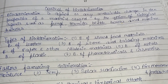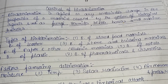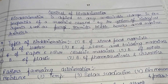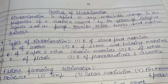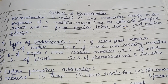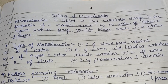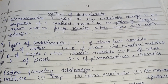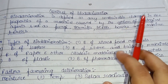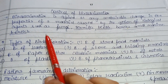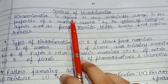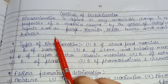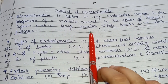Hello everyone, welcome back to my channel. Today's topic is control of bio deterioration. Bio means living beings and deterioration means damage of something. Bio deterioration is defined as any undesirable change in the properties of a material caused by the action of biological agents such as fungi, termites, beetles.